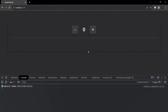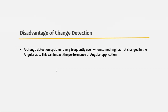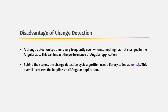This is a disadvantage. When we rely on change detection to update the UI whenever data changes, it works as expected. But the problem is that the change detection cycle also gets called when no data has changed, so it gets called very frequently, and this can impact the performance of our Angular application. Another thing to remember is that behind the scenes, the change detection cycle algorithm uses a library called zone.js.